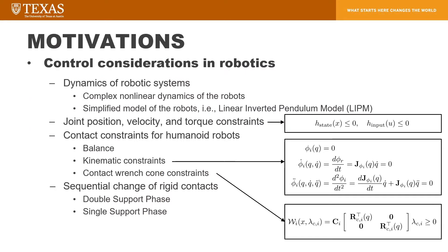When we control complex robotic systems like humanoid robots, we have to consider multiple issues. First, full-body dynamics is nonlinear — sometimes we use a linear inverted pendulum model for planning. Second, most robots have physical joint position, velocity, and torque constraints. Third, we consider kinematic constraints for contact and friction cone constraints.